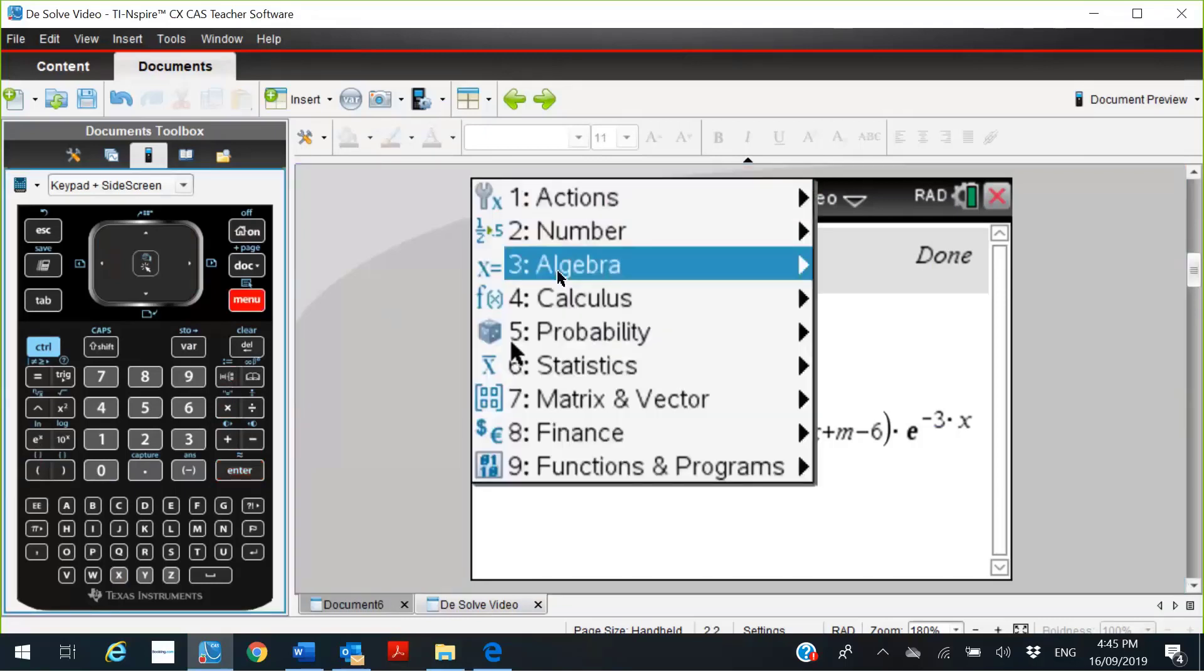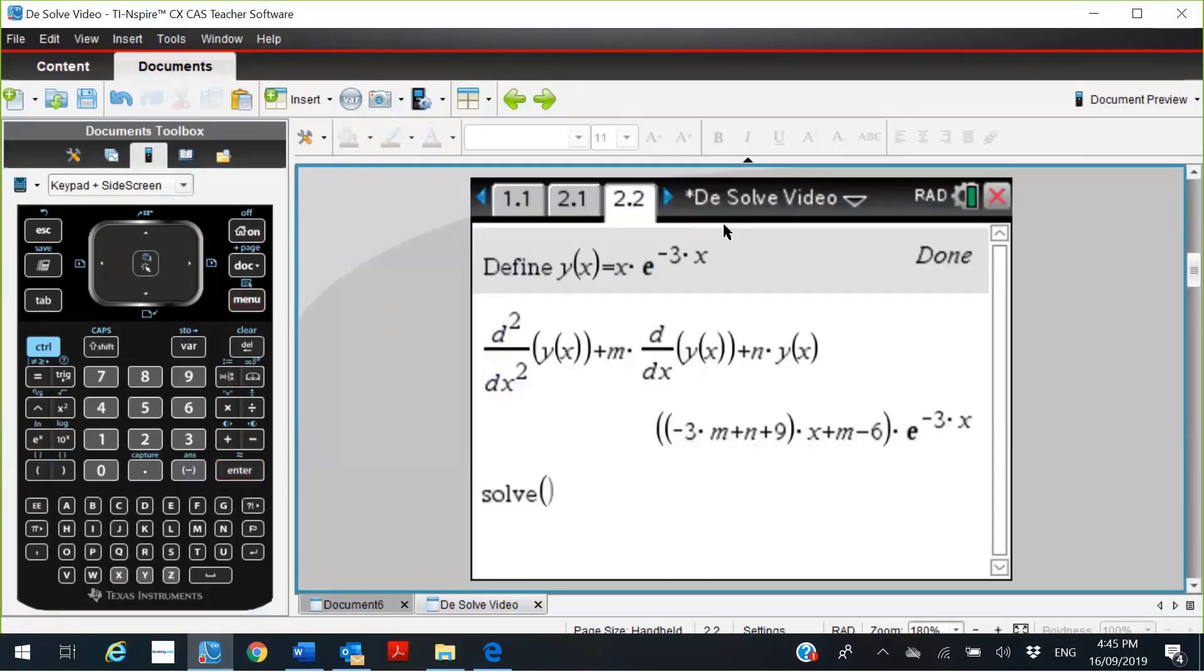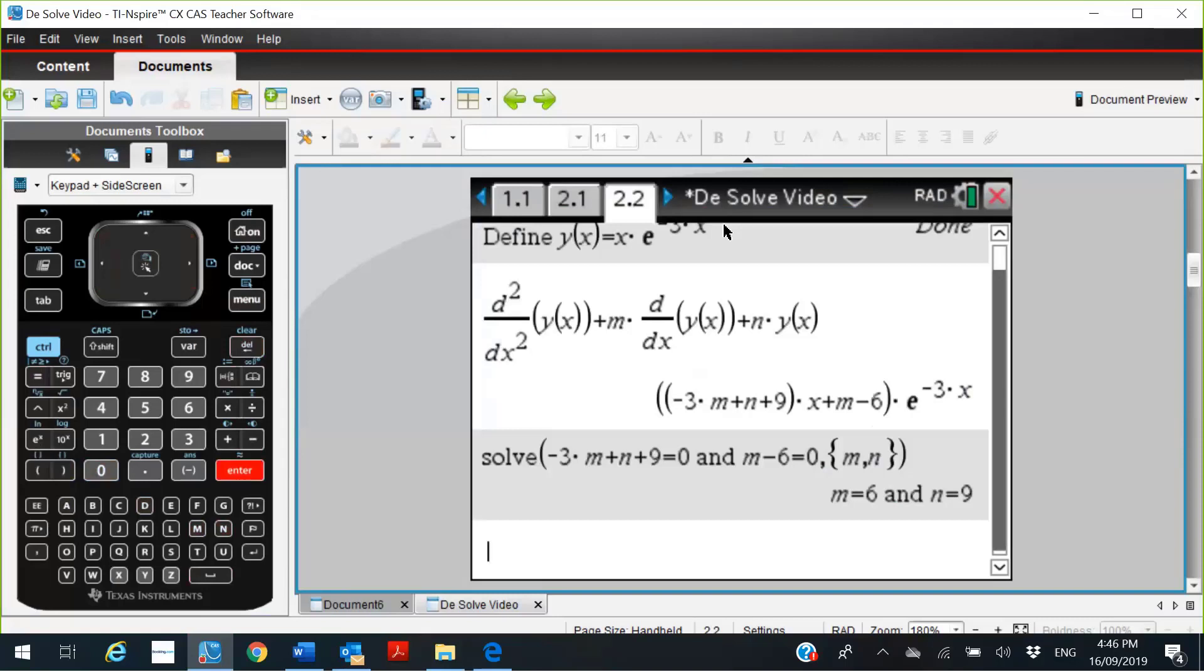So menu, algebra, solve. Let's just grab that expression again. We probably won't need that part of it. We want to solve this expression equals 0, put in a space, and m minus 6 equals 0. And we want to solve that for m and n. And the brackets were all okay. So the solution is m equals 6 and n equals 9, which satisfies that differential equation.